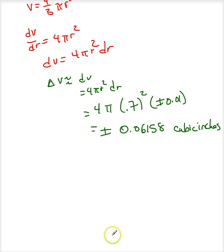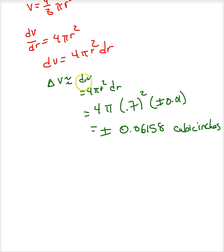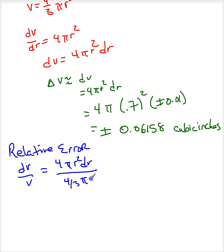Now we can look at whether this is a good error or a bad error. In order to do that, let's look at dV divided by the actual volume. This is just going to give us a relative error. So dV is 4 pi r squared dr divided by the actual volume, which is 4 thirds pi r cubed.